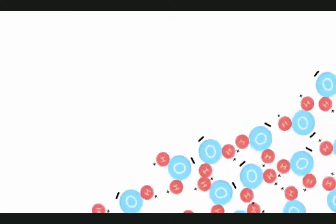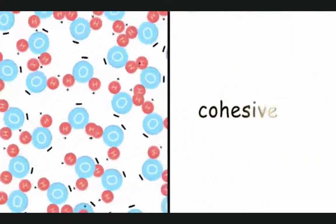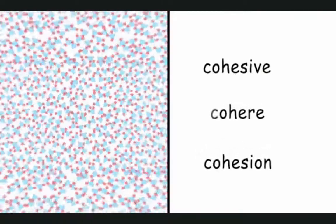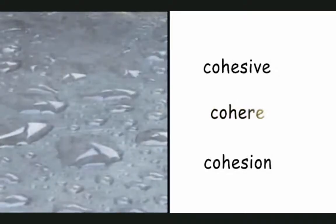Molecules that stay close to each other are called cohesive, and water is highly cohesive. A pentillion, even hexillion, of chaotically moving, tightly packed H2O molecules cohere to make a single raindrop.